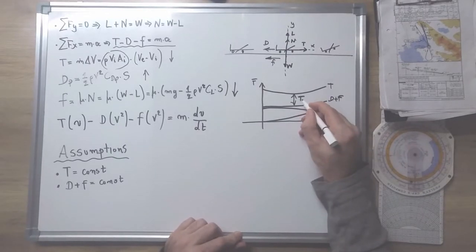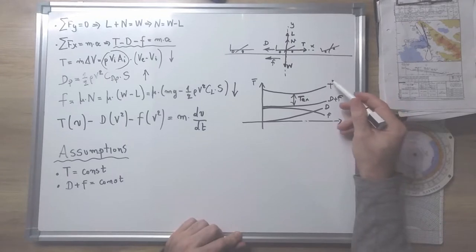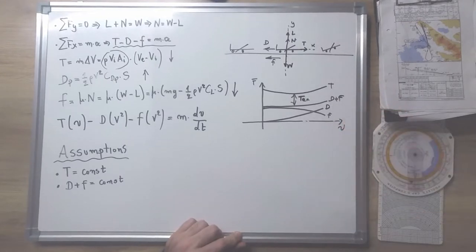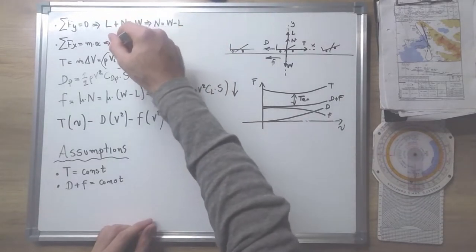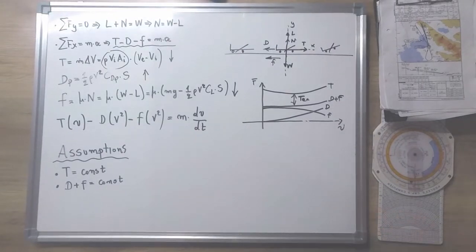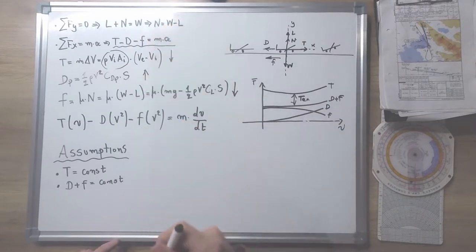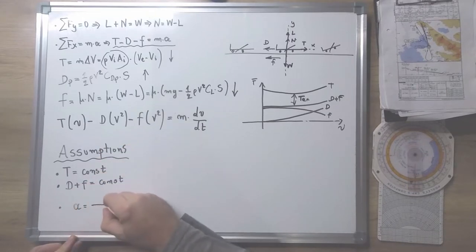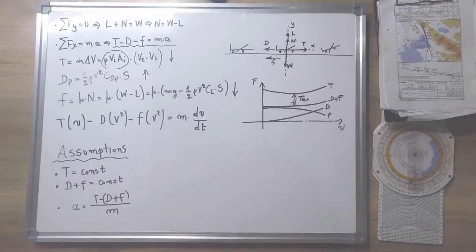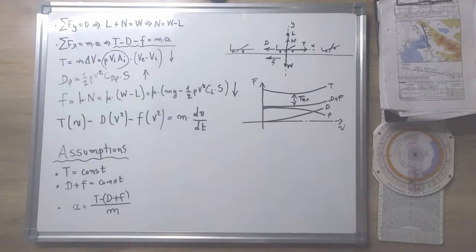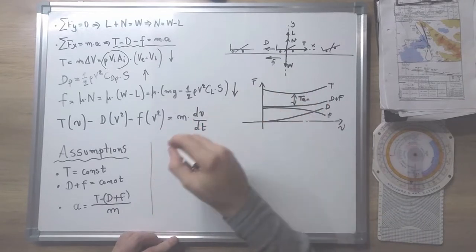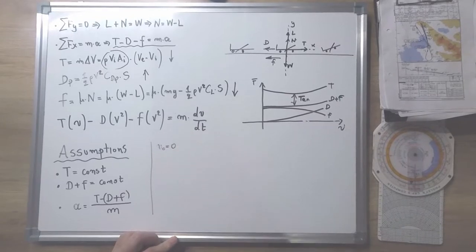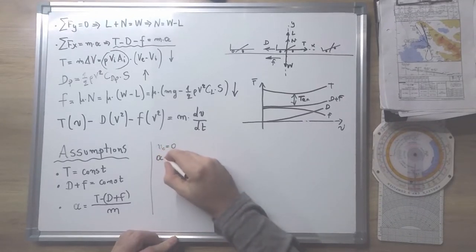So this is the excess thrust. If we assume that the thrust is constant and the sum of resistance forces is constant, then the total sum of forces is also constant. So the acceleration will also be constant, and we can calculate it from Newton's second law. From the constant acceleration motion formulas, we have the initial speed of the aircraft which is zero, as the aircraft is not moving, and we have a constant acceleration. The velocity of the aircraft at any time is the acceleration multiplied by the time elapsed.